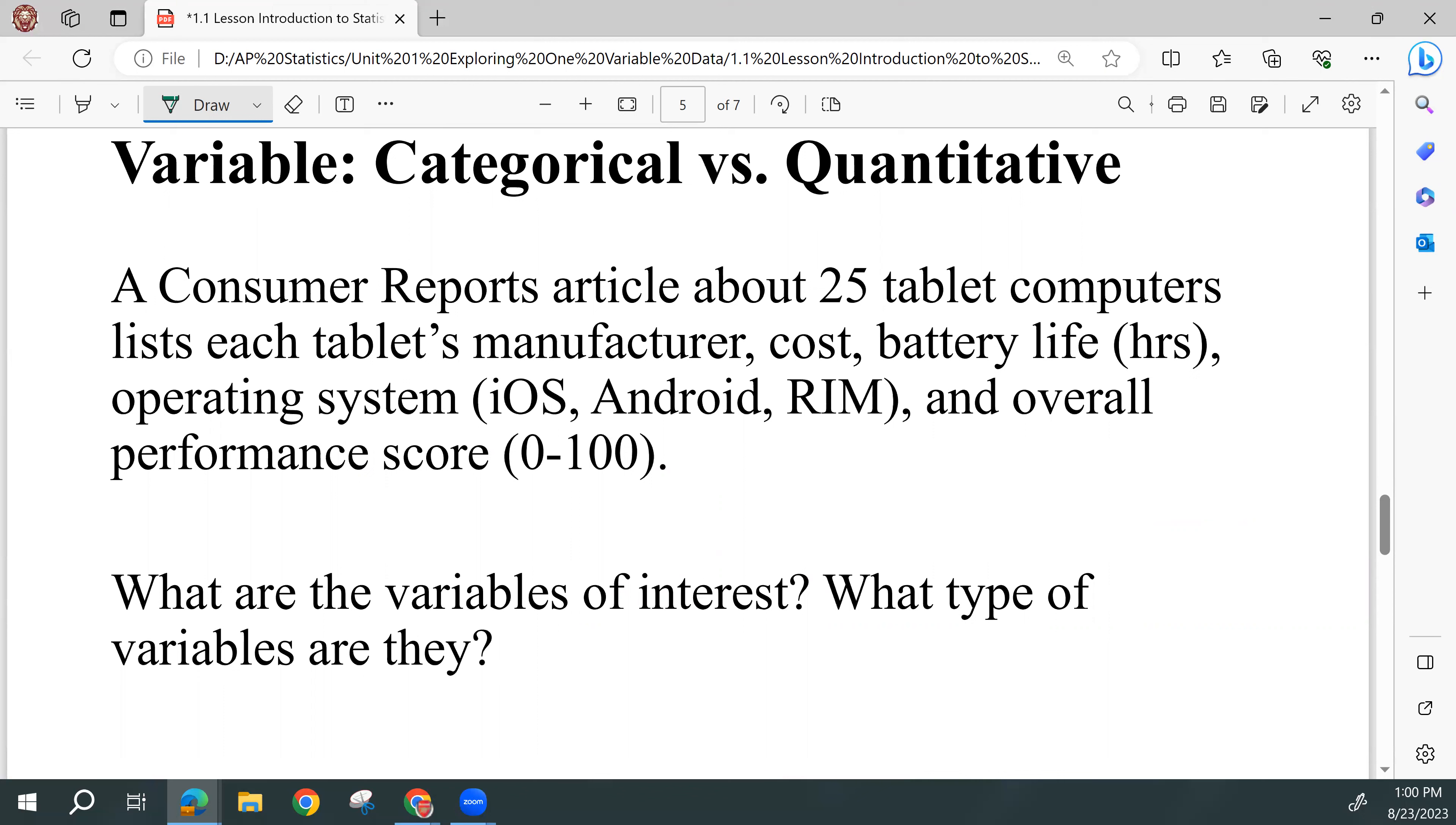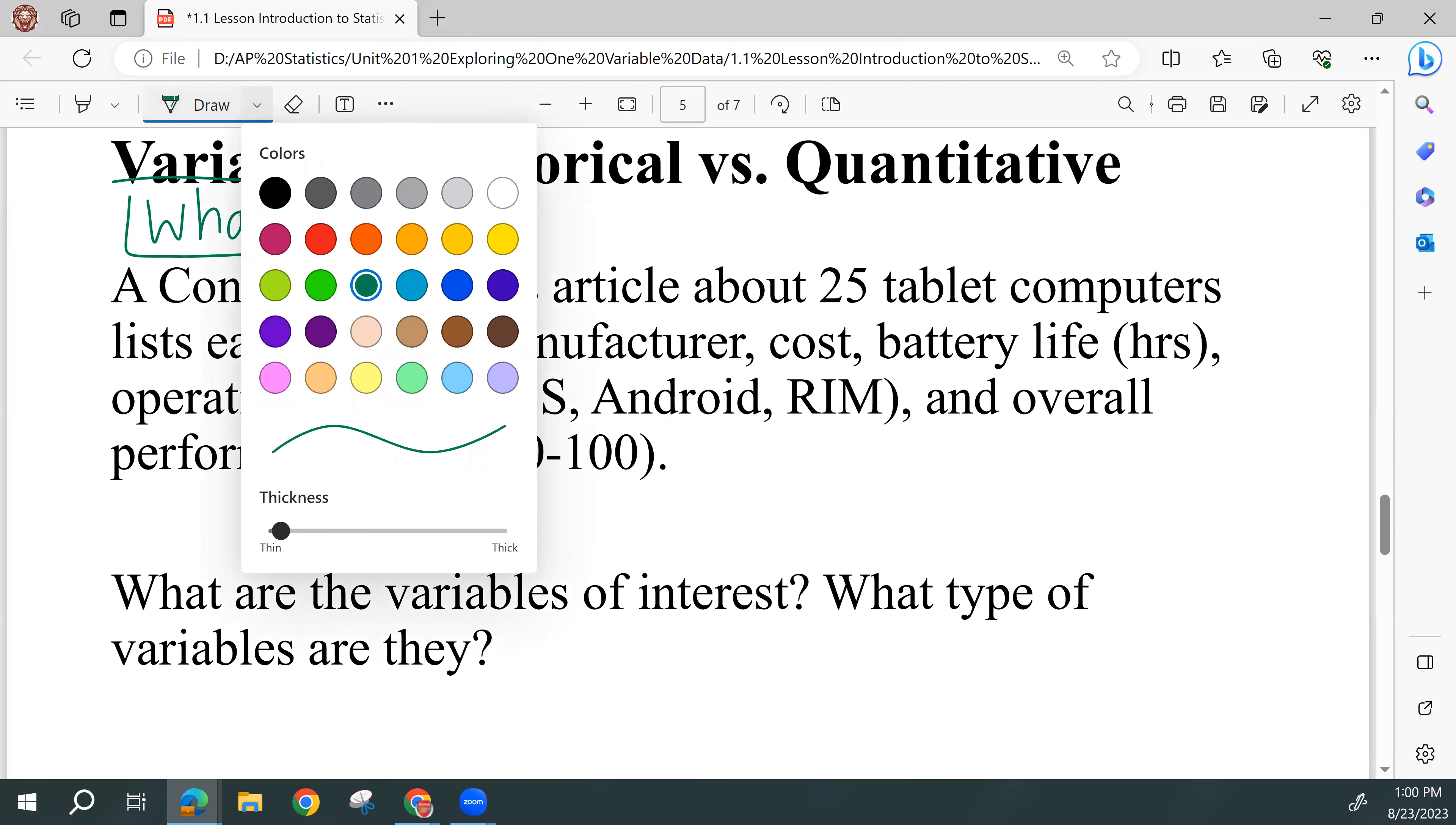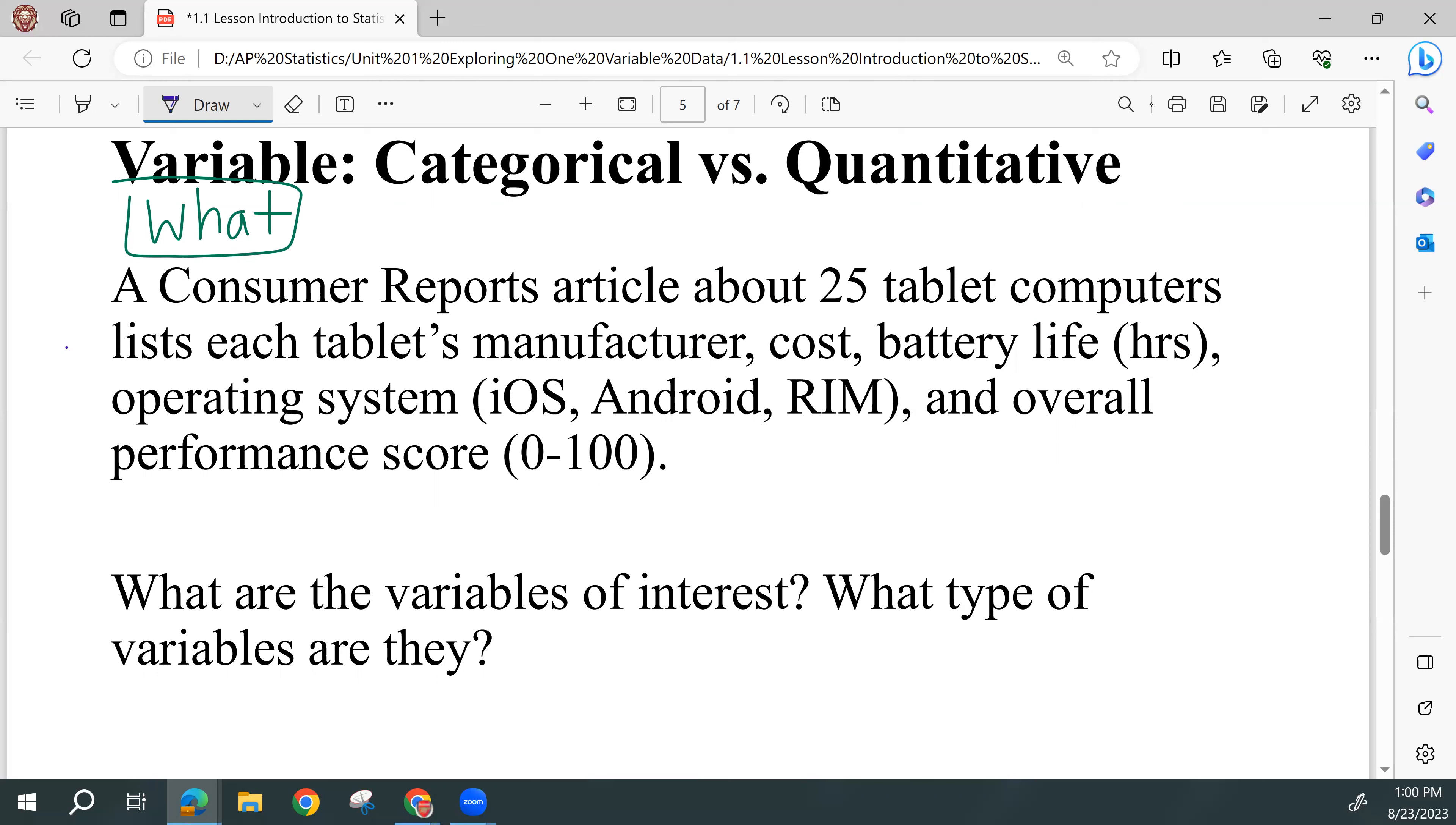So I mentioned at the beginning that the variable, the thing that we are looking to find out about, that is our what. We just talked about the two possibilities for who we are trying to find about, and so there are two different types of variables, two different types of what's that we will find out about. We have categorical variables and quantitative variables. Categorical variables are pretty appropriately named. They're unitless.